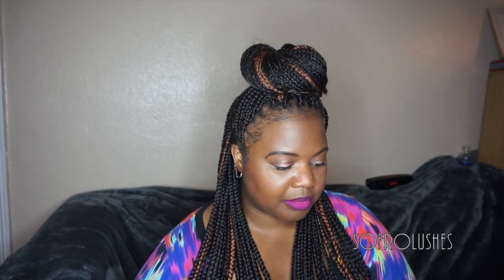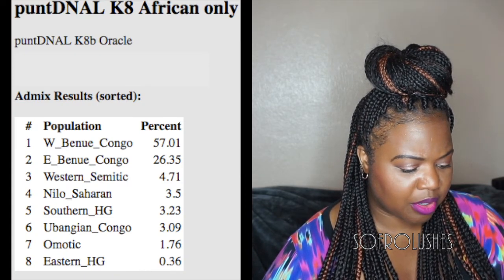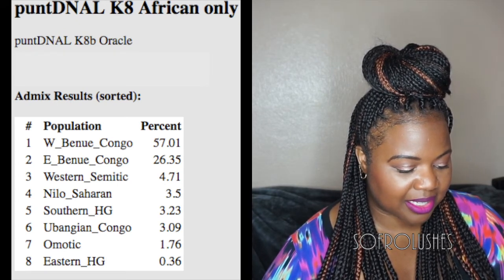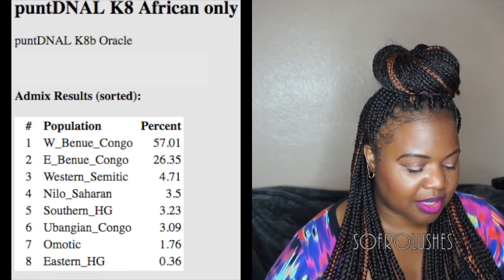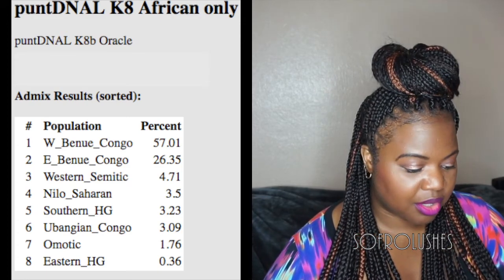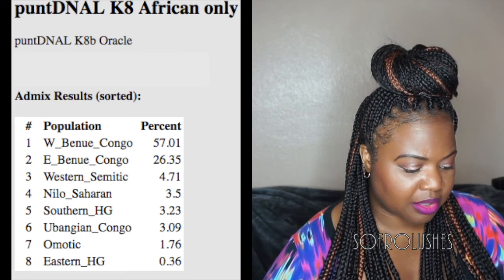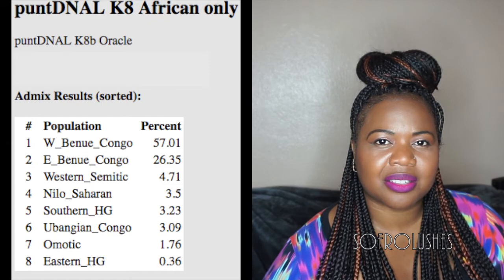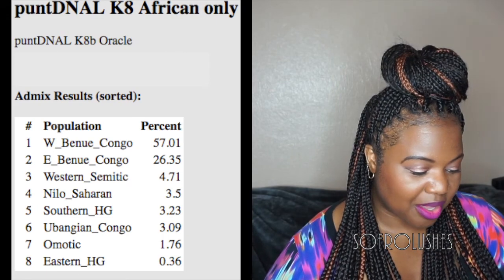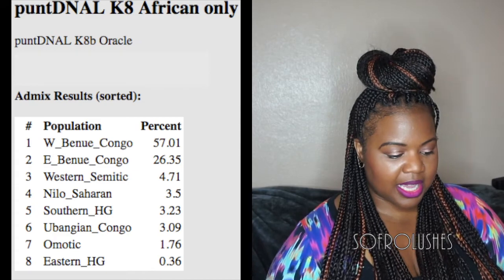The next calculator is Punt DNA LK8 Africa only. My results are: West Bantu-Congo 57.01%, East Bantu-Congo 26.35%, Western Semitic 4.71%, Nilo-Saharan 3.5%, Southern Hunter-Gatherers 3.23%, Ubangian-Congo 3.09%, Omotic 1.76%, and Eastern Hunter-Gatherers 0.36%.